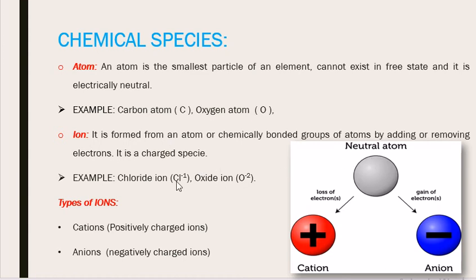For example, chloride ion is formed from chlorine. When a chlorine atom gains one electron in its valence shell, it gets negative one charge and it is chloride ion. Oxide ion (O2-) is formed from an atom of oxygen by gaining two electrons. Ions can be of two kinds: Cations or anions.